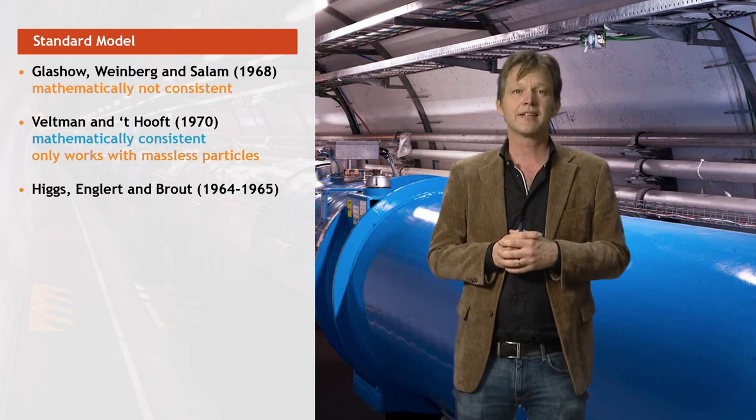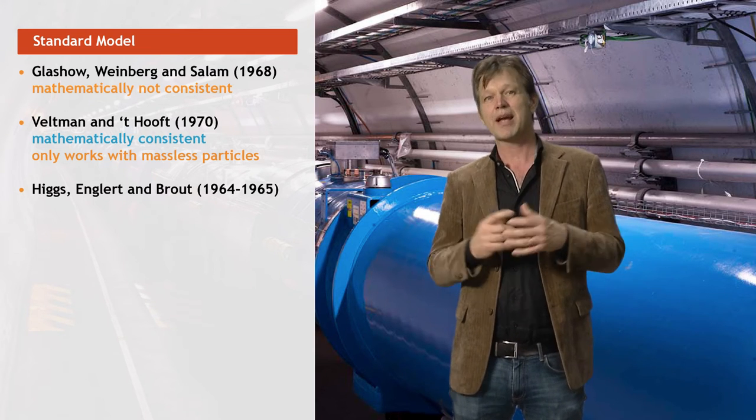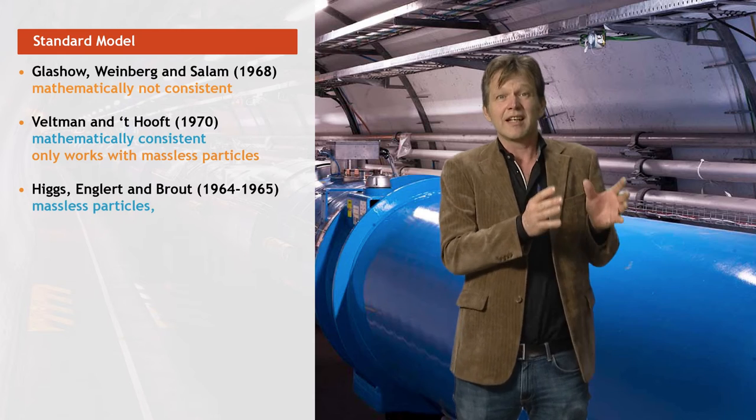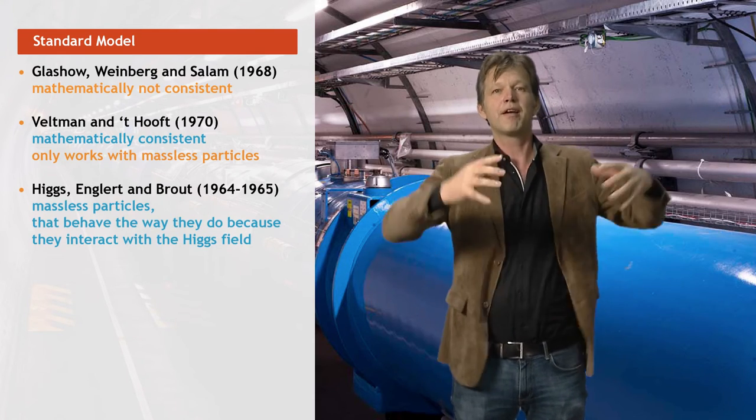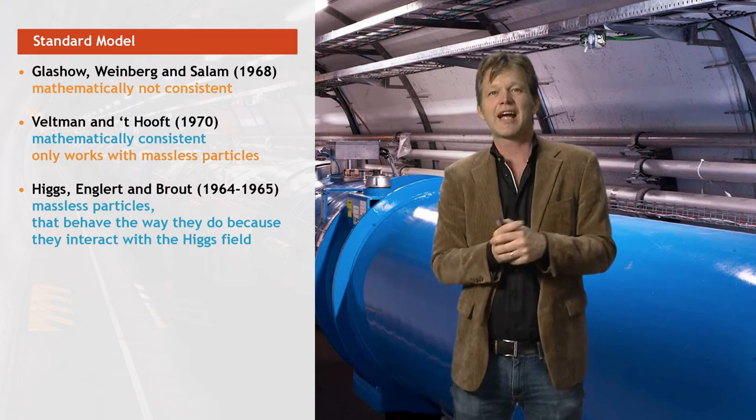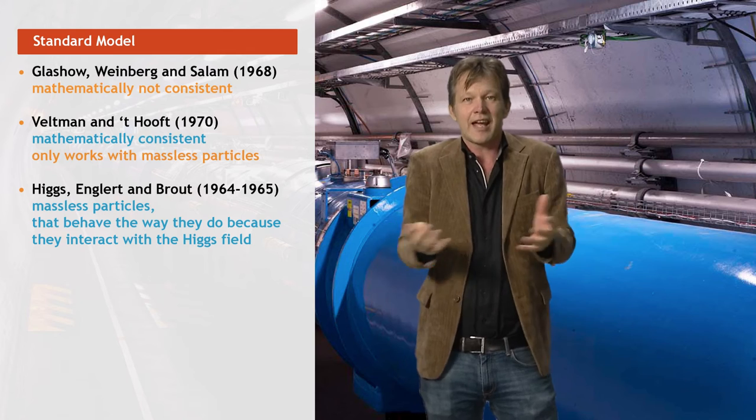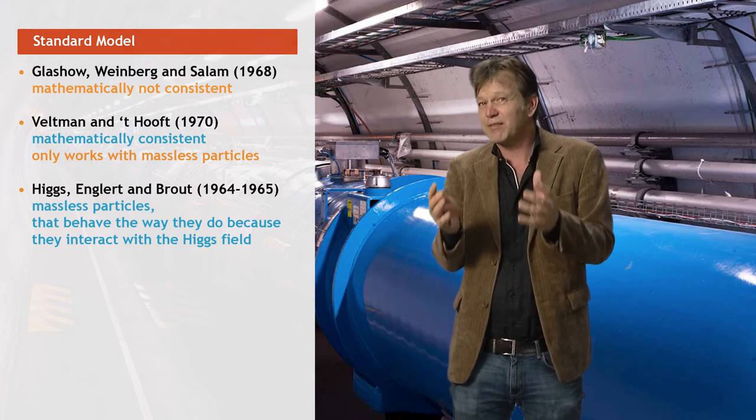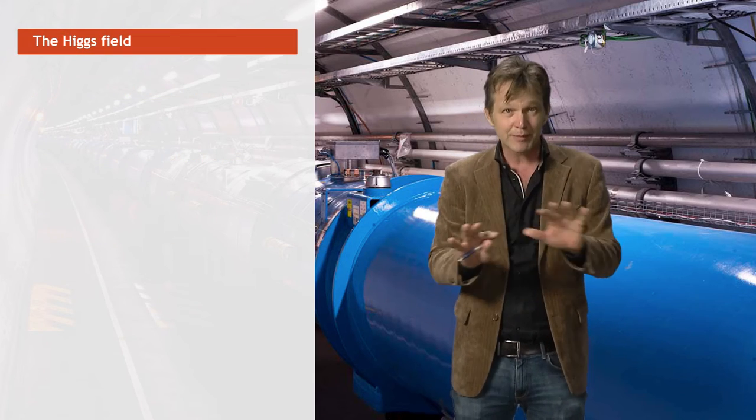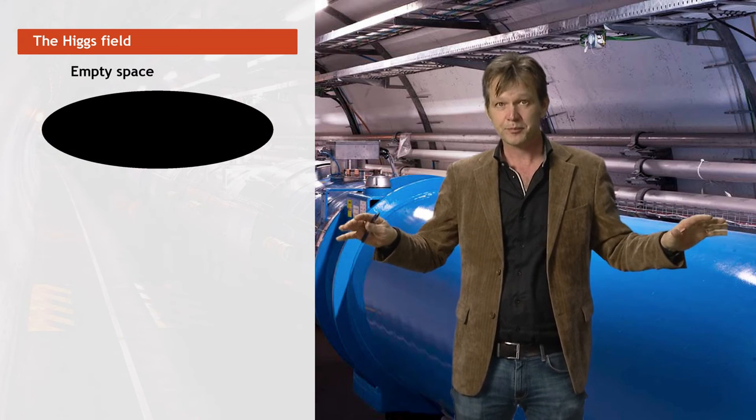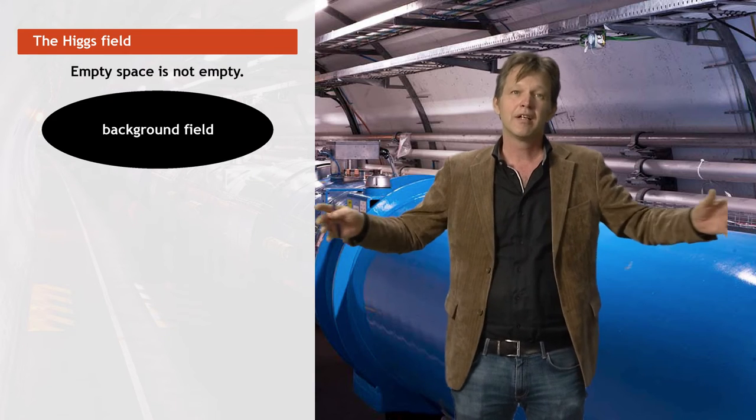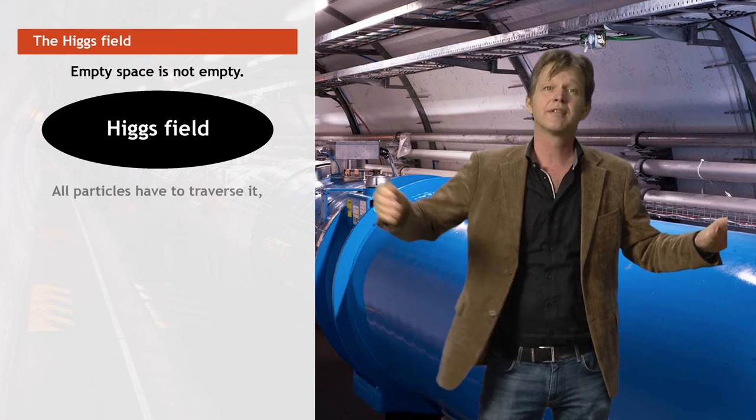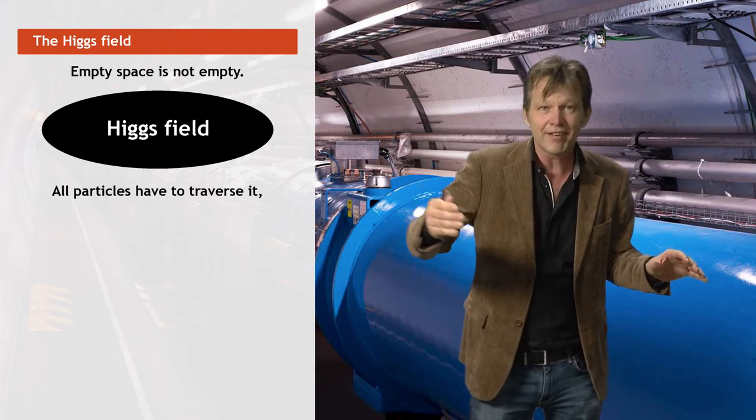And one way to look at it is the following. As I just said, the mathematical trick of Veltman and Gerard 't Hooft works for particles with no mass. And the trouble is that if particles don't have a mass, they fly away. They fly away through empty space with the speed of light. And this is what Einstein already predicted with his special relativity. You cannot create stable matter if the constituent particles have zero mass. And the Higgs mechanism is a way out and simply postulates that empty space is not empty at all. It's actually filled with a continuous background field. We call this the Higgs field. And with this field, all particles have to traverse it.